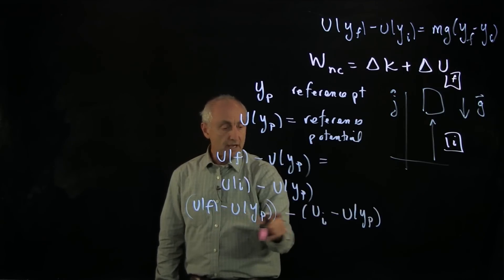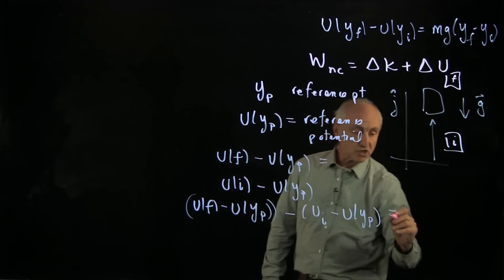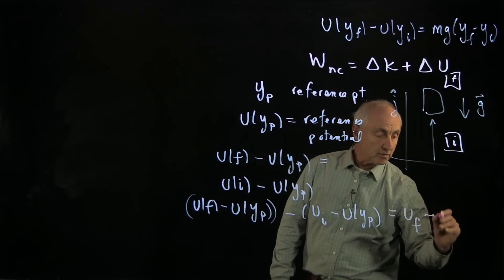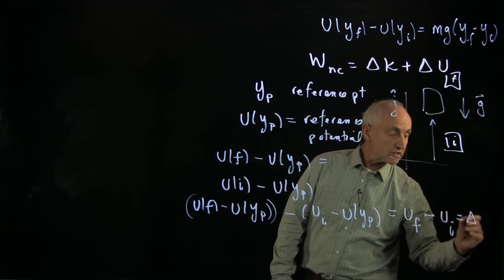the reference points here, we have a minus, here we have a plus. This is just equal to u final minus u initial, which is delta u.